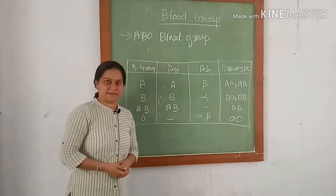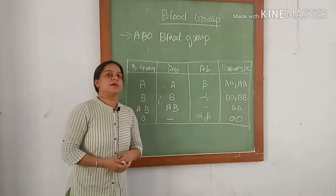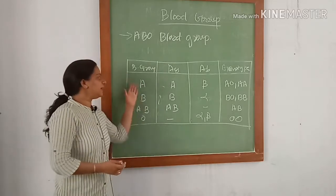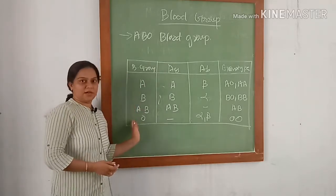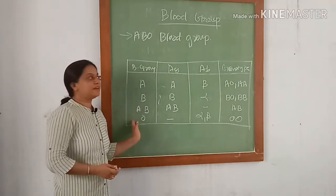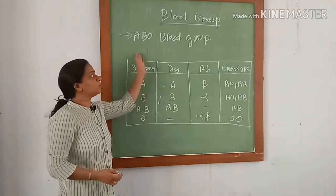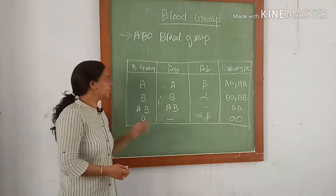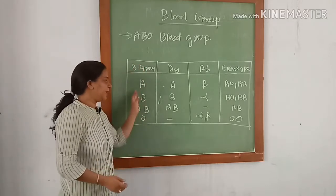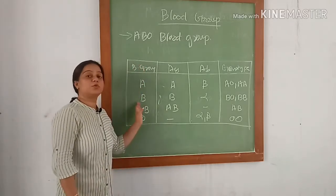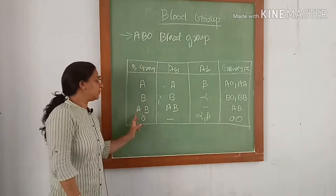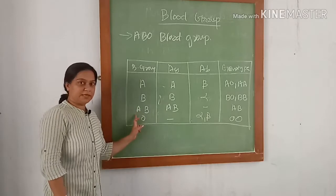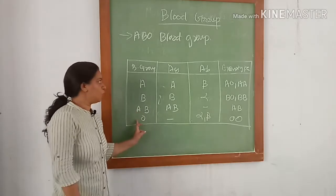Let us go through the ABO blood group system. There are mainly four blood groups determined through the ABO blood group system: blood group A, blood group B, blood group AB, and blood group O.